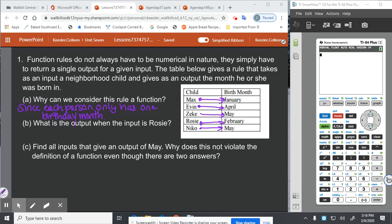And then what is the output when the input is Rosie? So if the input is Rosie, the output is February.